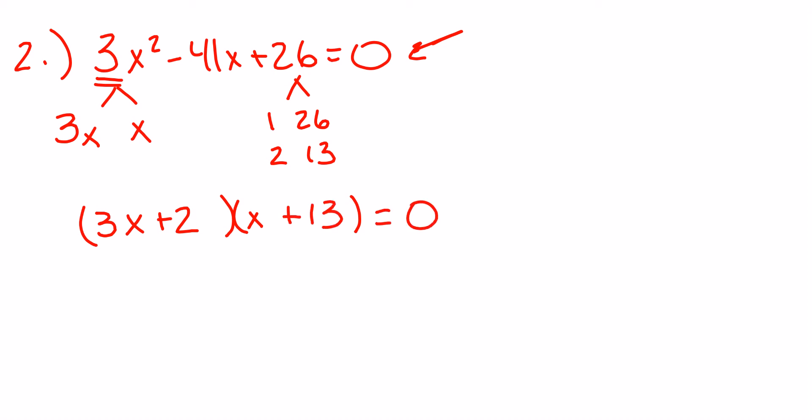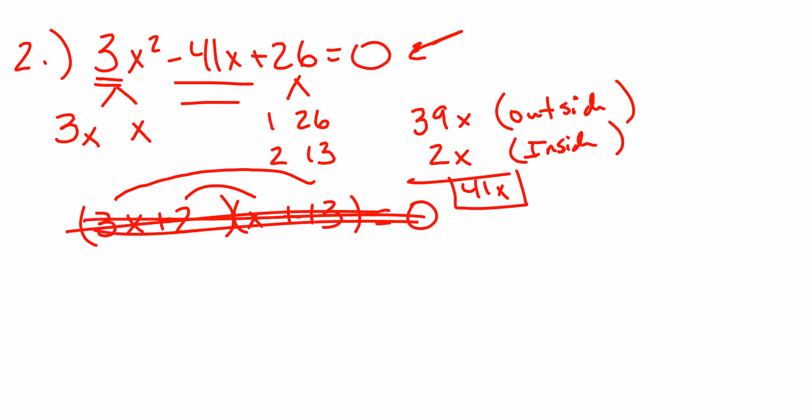Now remember, it's still equal to 0. And remember, you have to show me that you check it using FOIL. So I do the outside, get 39x. Remember, that's the outside of FOIL. And then we do the inside, 2x. Together, that's 41x. Well, the middle is -41x. So that answer is really, really close, but it's not right. Remember, if you ever have the right number with the wrong sign, you just change both signs. So instead of 2 and 13, I'm going to have -2 and -13. And that one's correct.